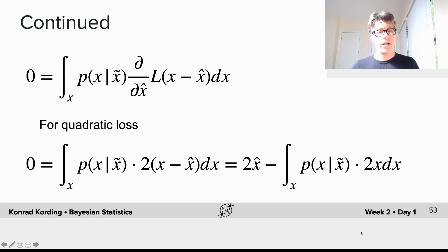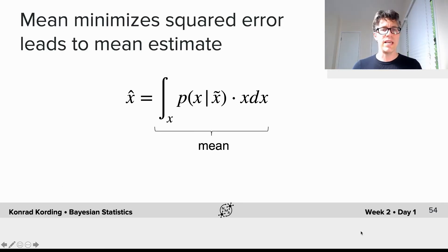For the quadratic loss, we can directly put that in. 0 has got to be integral over x of the posterior times 2(x - x̂) dx, which is 2x̂ minus this integral term that we see here.